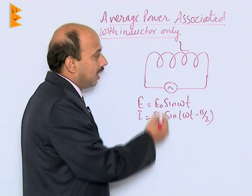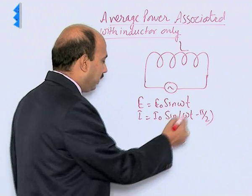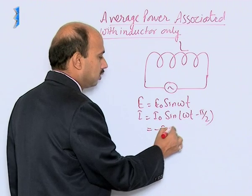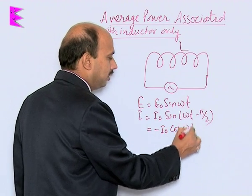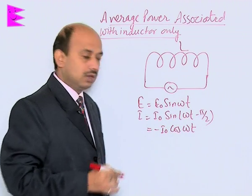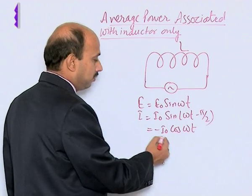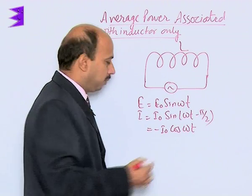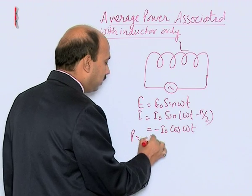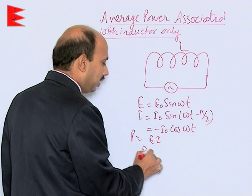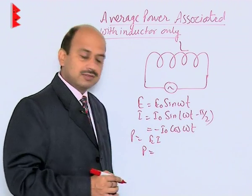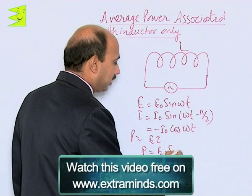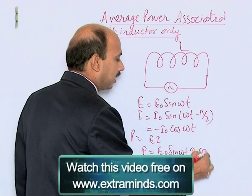Current lags behind in an inductor. So we can write in this case I is equal to minus I naught cos omega t. We can calculate the instantaneous power. Power is equal to E into I, so power consumed at any instant is E naught sin omega t multiplied by I naught cos omega t.